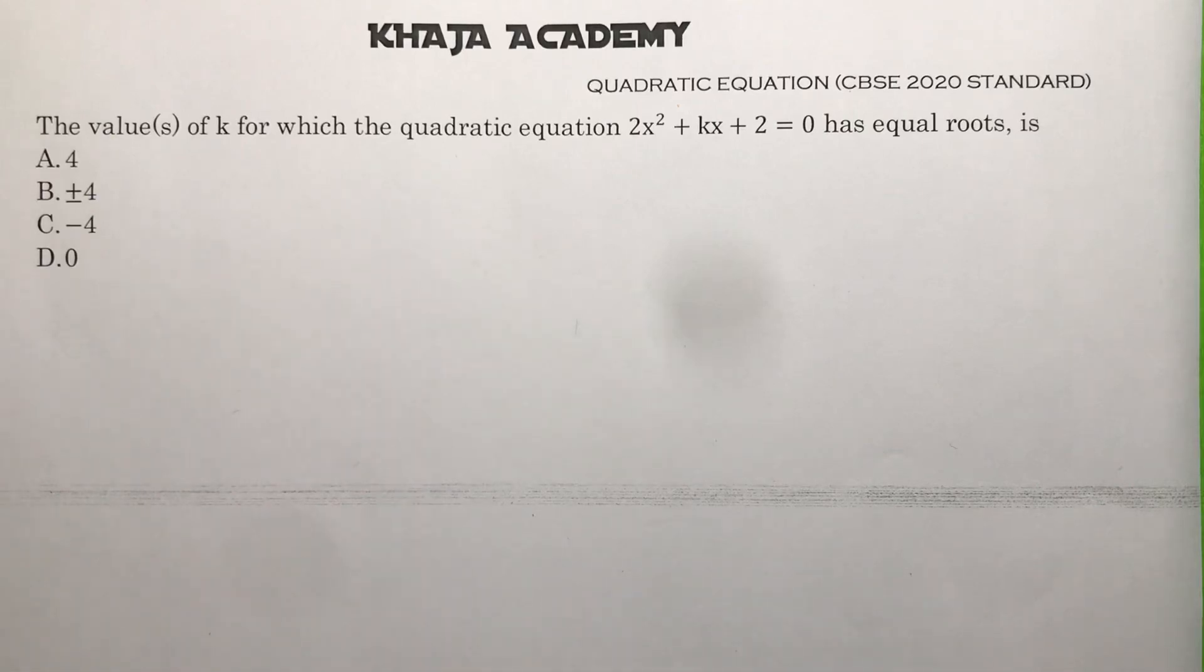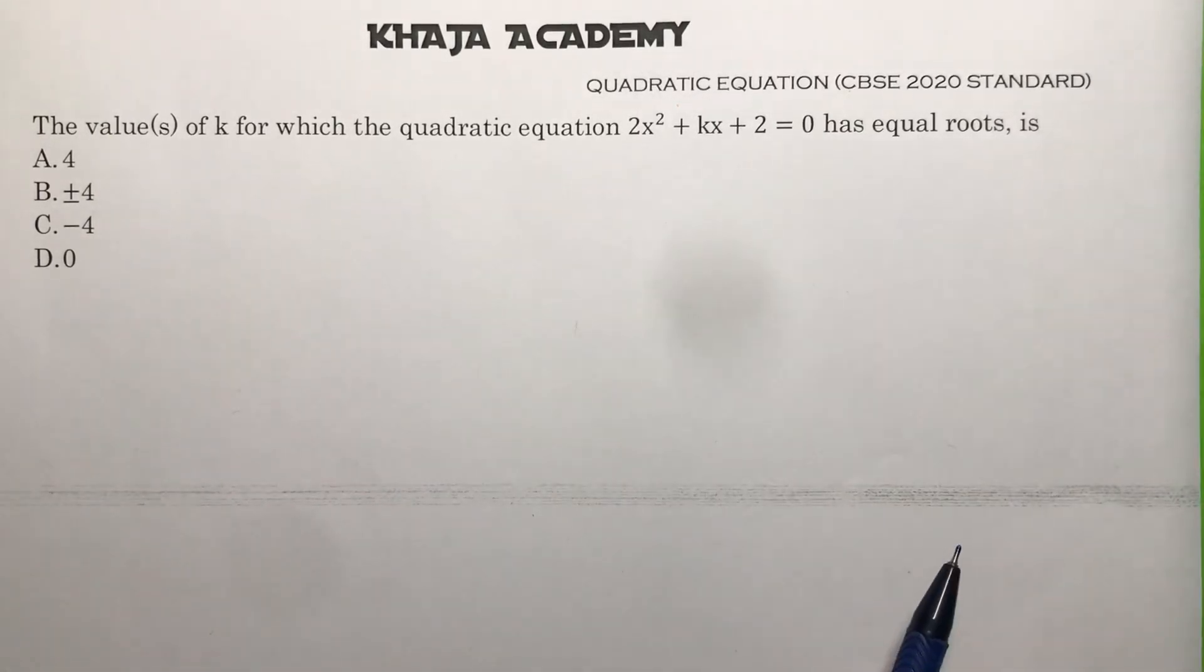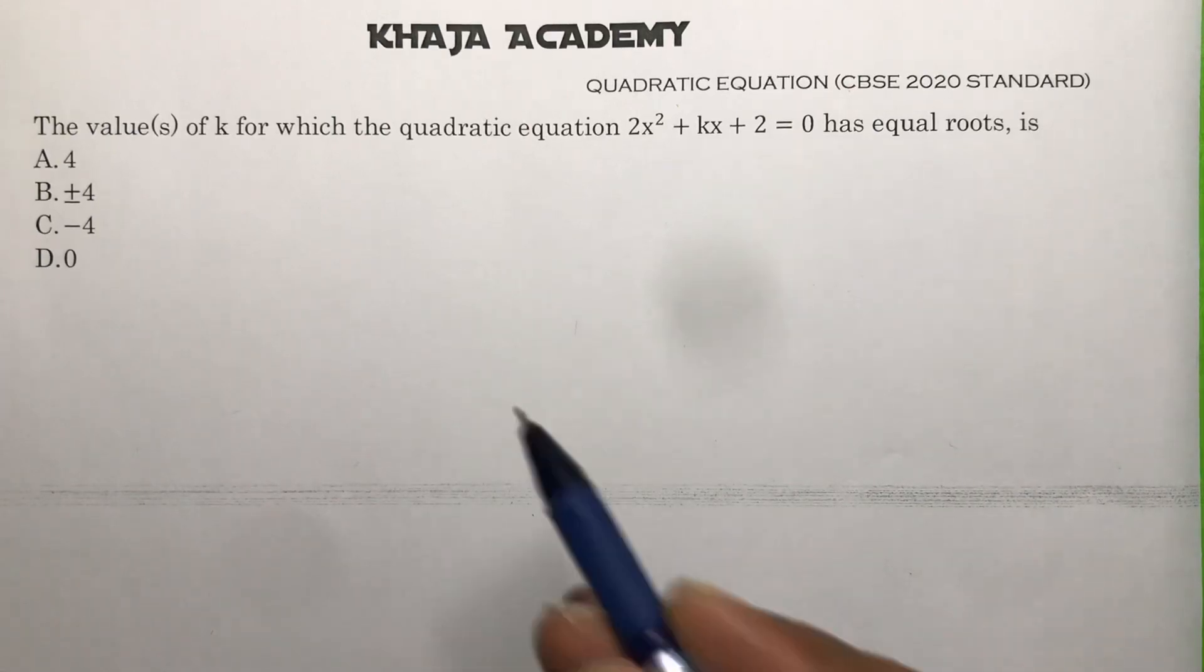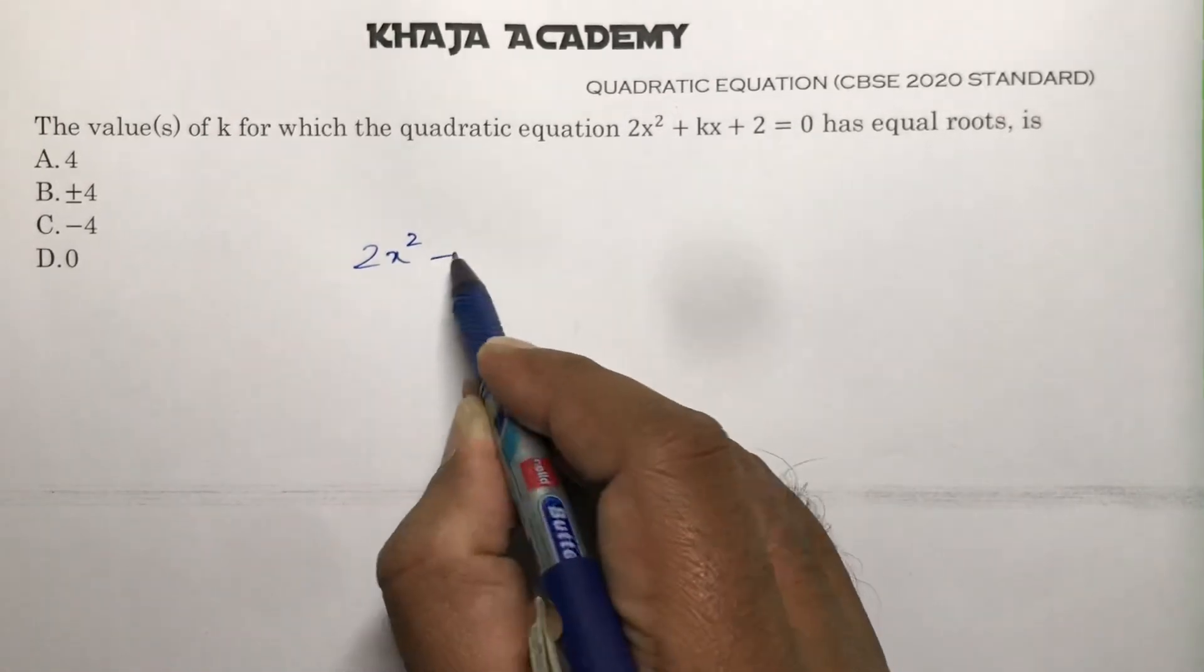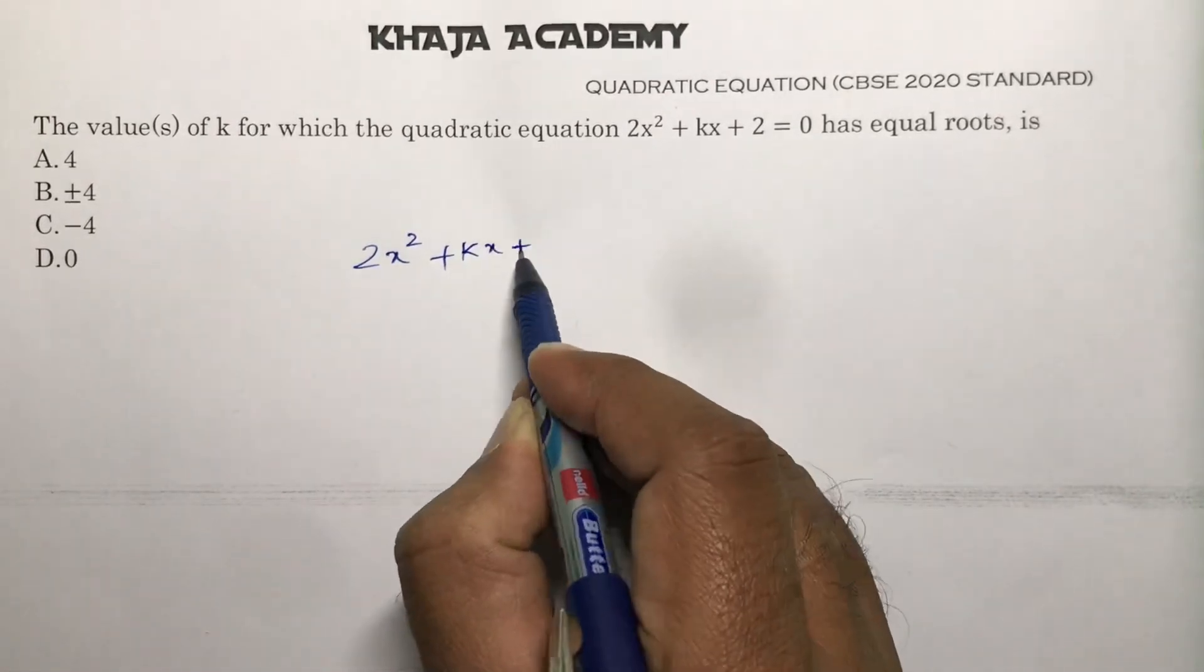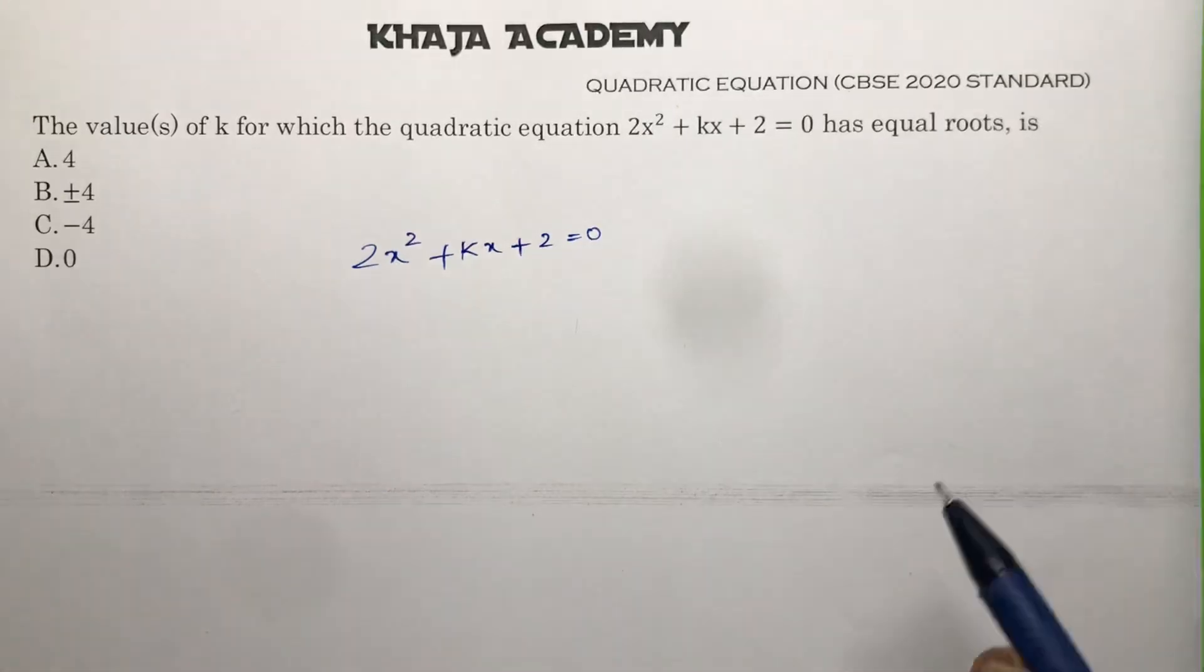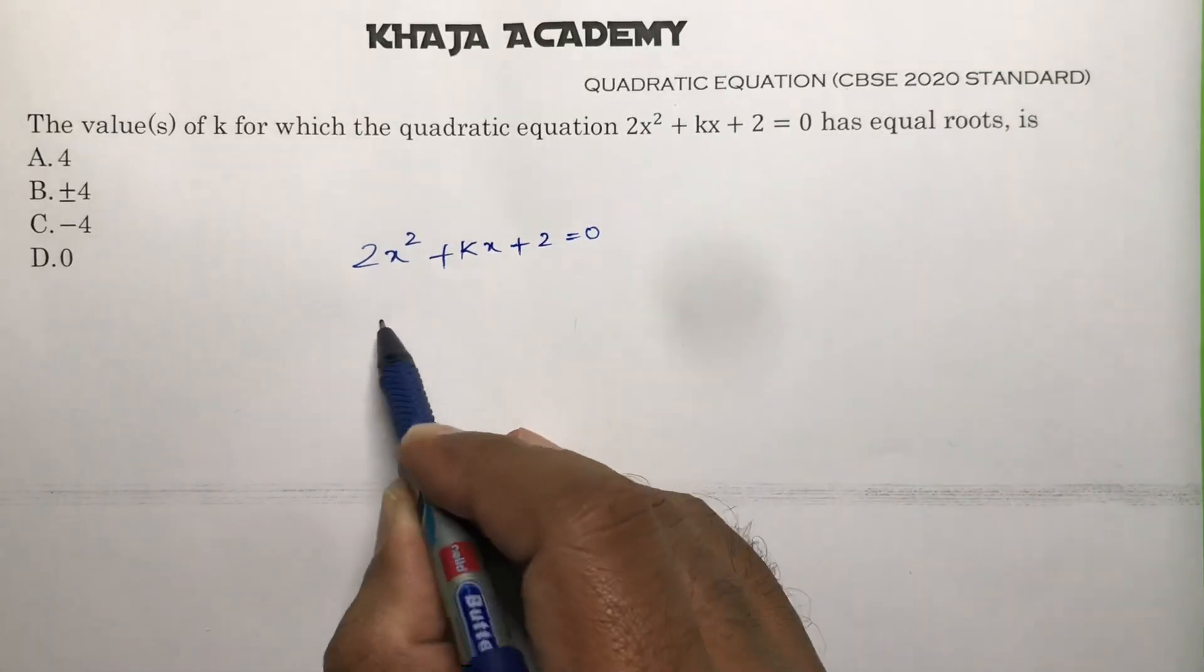The value of k for which the quadratic equation 2x² + kx + 2 = 0 has equal roots. If it has equal roots, then...